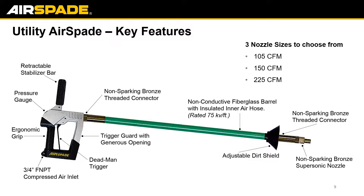These are some of the features of our utility-specific Air Spade designed for the utility and construction industry. Key features include non-sparking fittings and a non-sparking nozzle, which is essential when working around utilities. It also has a non-conductive insulated barrel rated up to 75 kilovolts per foot along with an inner hose — the air flows through the inner hose, not the fiberglass, which is a great safety feature. Another safety feature is our dead man trigger, which keeps the user safe if the unit is dropped by ceasing all air flow. Our handle is very ergonomic with multiple grips — a traditional pistol grip or a two-handed grip for vertical-style trenching.